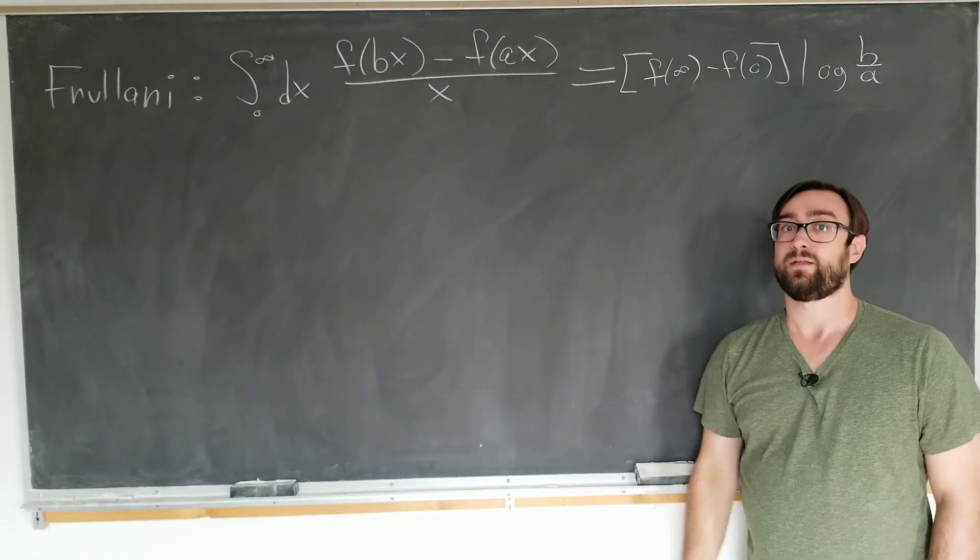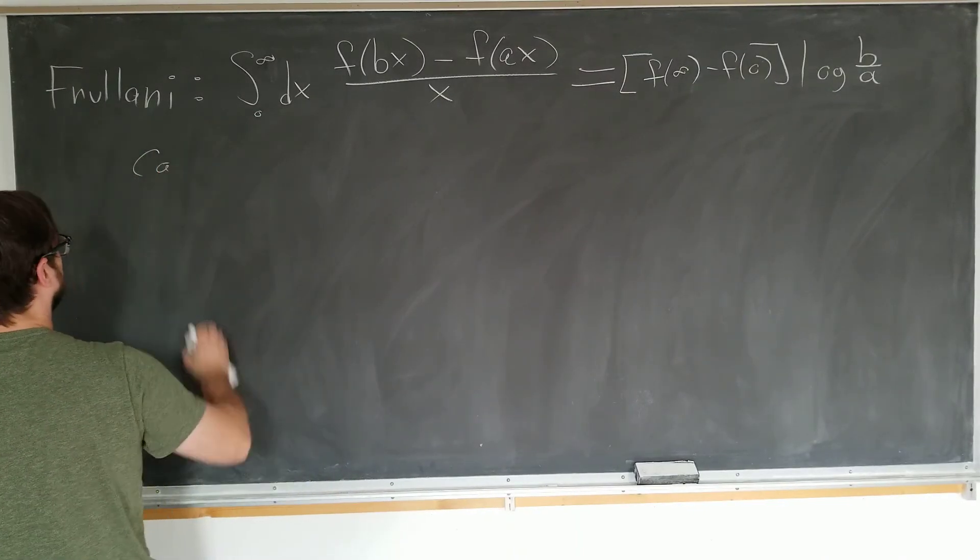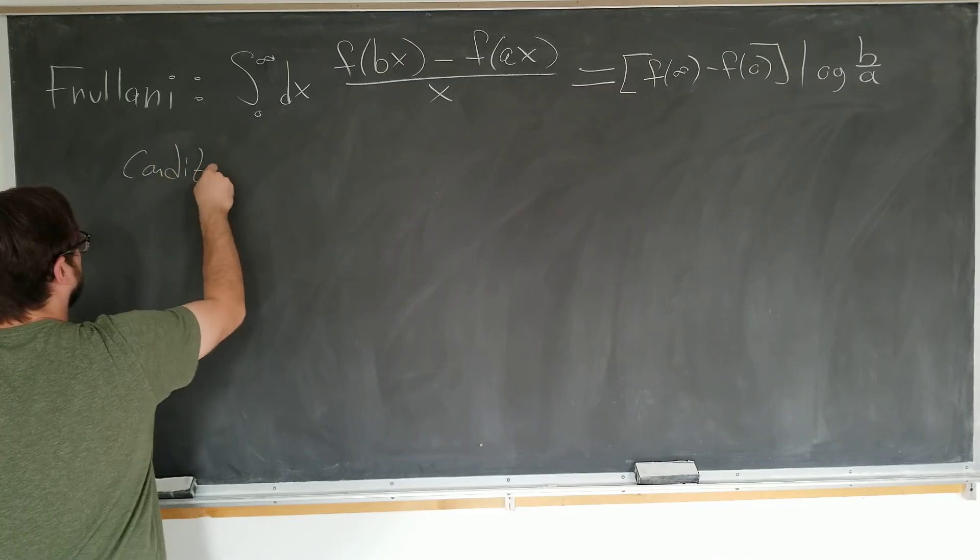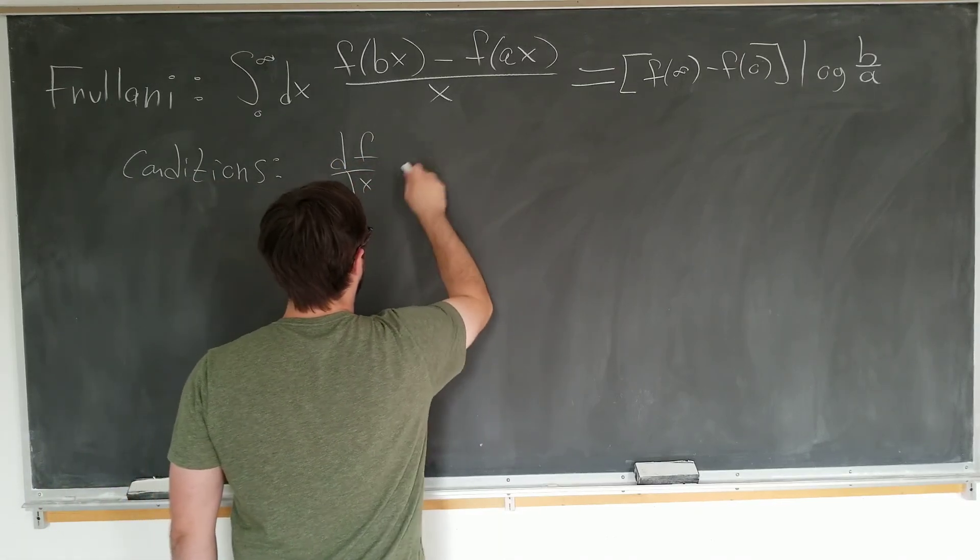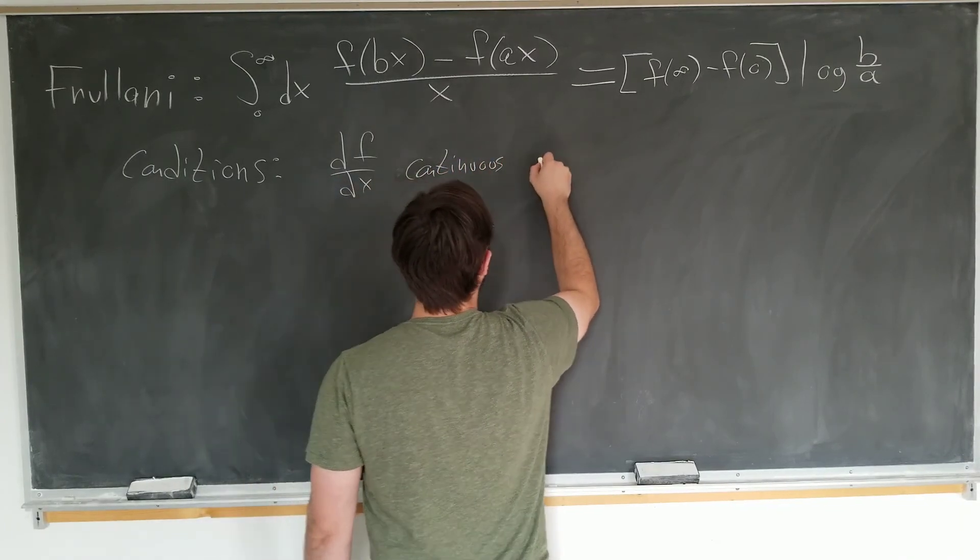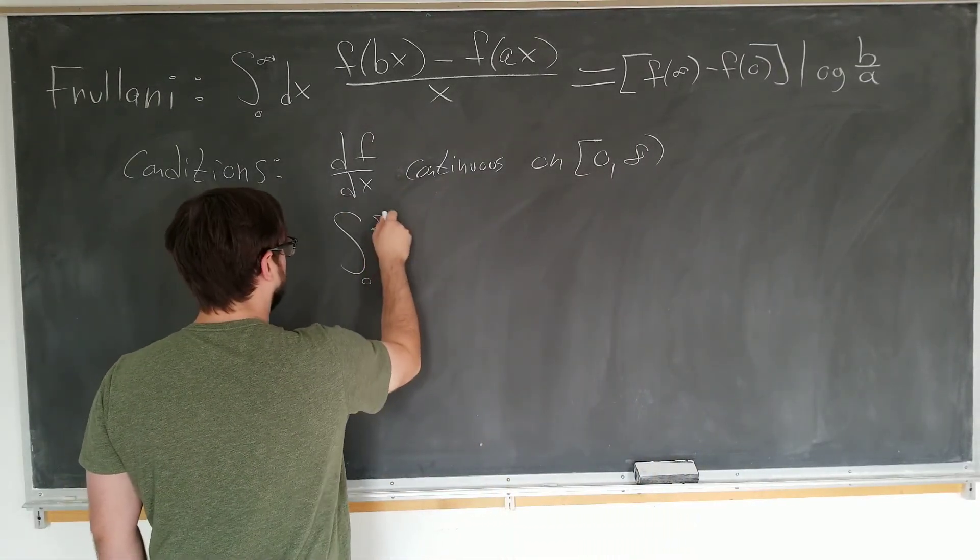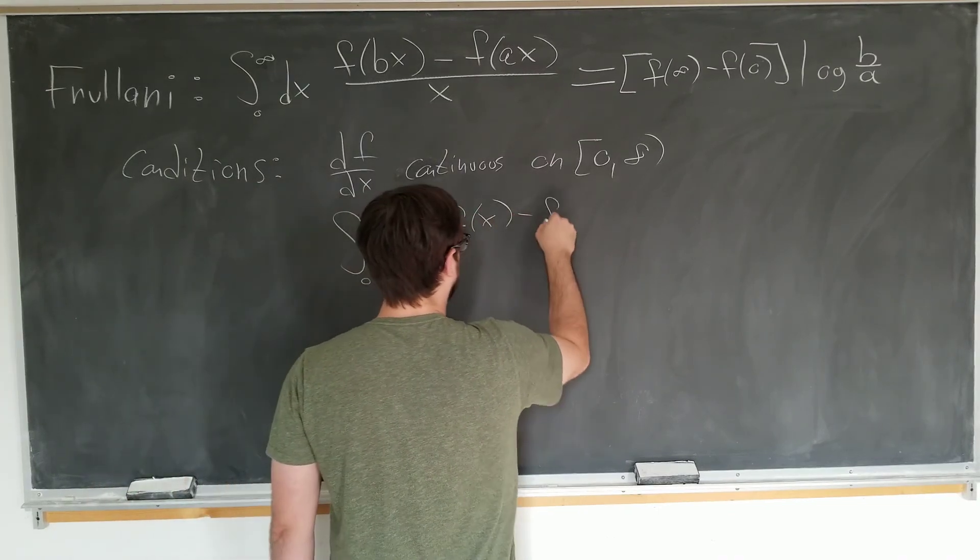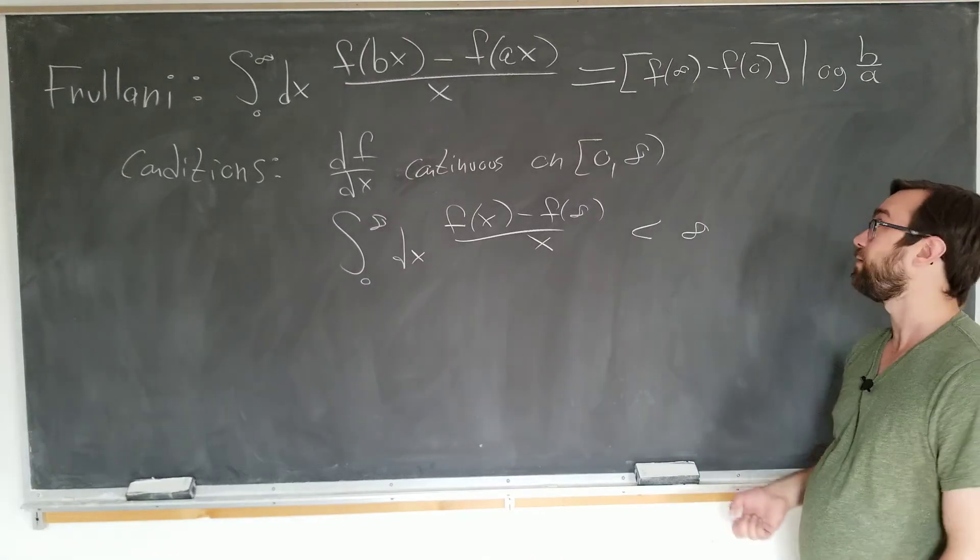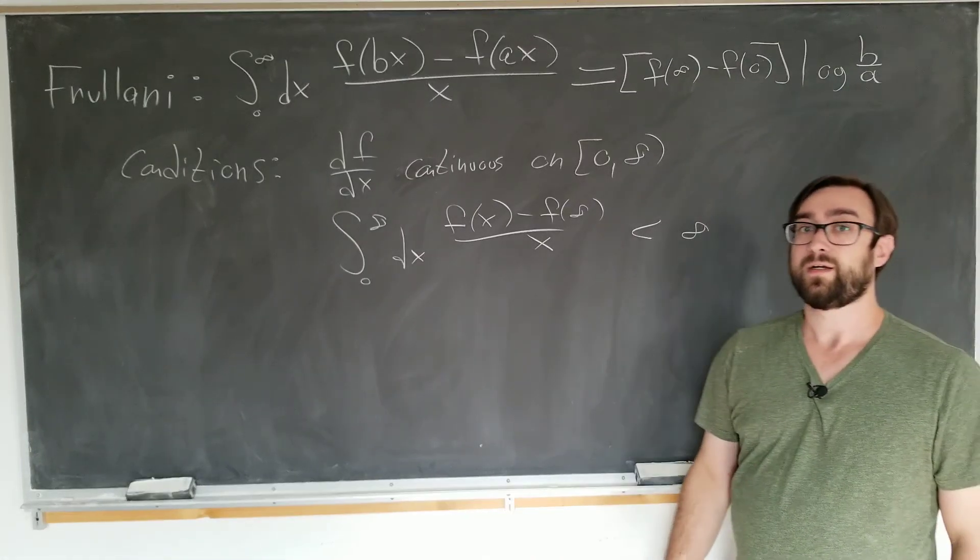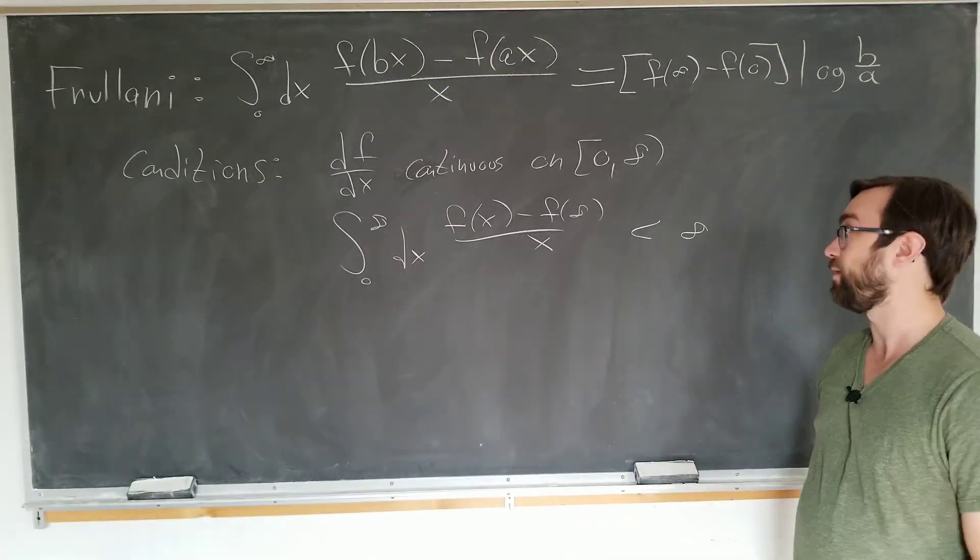Now this won't hold for any function. There are certain conditions that physicists don't typically care about. Well, let's go ahead and write them down. So, it applies for these conditions. They would apply for the derivative continuous on the integral 0 to infinity. And we also have to have the integral of f of x minus f of infinity over x to be finite. For these conditions that a mathematician would care about, well, this integral will be equal to this. As a physicist, we don't really care. In fact, we would use this on any function that we want. And then if it didn't agree, we would know that these conditions weren't satisfied.